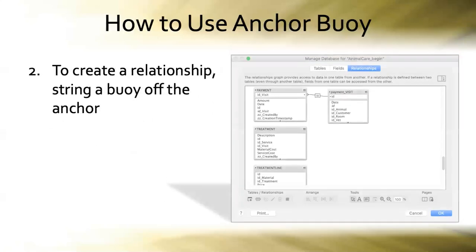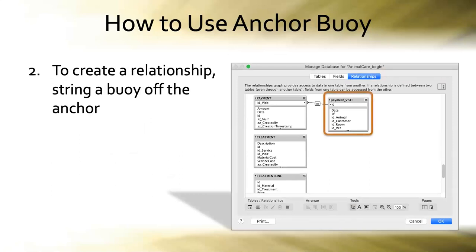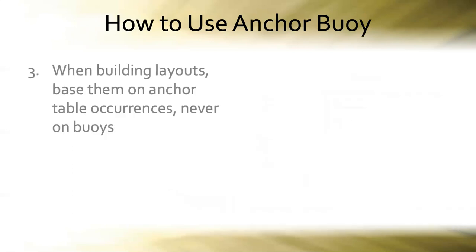The second premise of Anchor Buoy: anytime you need to create a relationship, string a buoy off of the appropriate anchor. This occurrence of the visit table — the naming scheme puts the name of the actual table in capitals, but we use the whole name like 'payment_VISIT' to make clear at a glance which anchor it's buoyed off of.